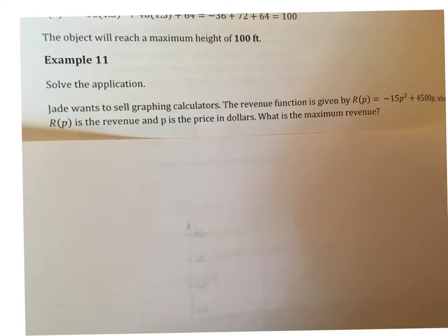This is example 11. It's on page 268. It says, solve the application. Jade wants to sell graphing calculators. The revenue function is given by R(p) = -15p² + 4500p. Where R(p) is the revenue and p is the price in dollars. What is the maximum revenue? And there we have our keyword again.